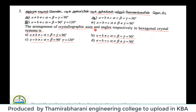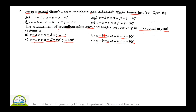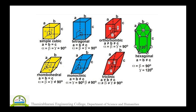The question is about the hexagonal crystal system — crystallographic axis and angles. There are seven crystal systems available: simple cubic, tetragonal, orthorhombic, rhombohedral, monoclinic, triclinic, and hexagonal.